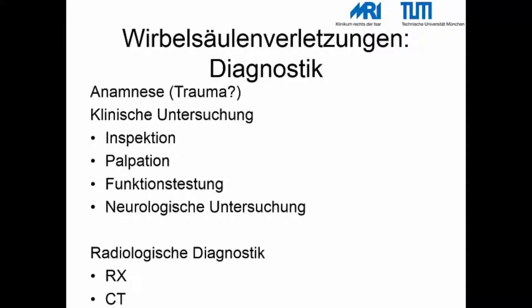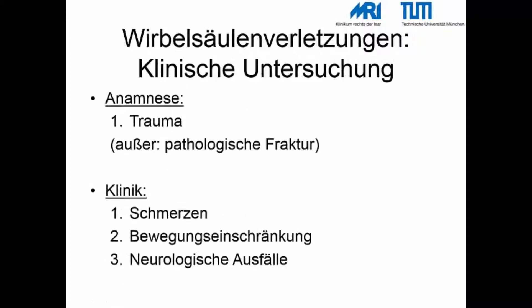Für Wirbelsäulenverletzungen ist die Anamnese ganz wesentlich. Die klinische Untersuchung sollte durch Inspektion und Palpation erfolgen. Funktionstestungen sind nur gestattet, solange radiologisch Frakturen ausgeschlossen werden konnten. Ganz wichtig ist die neurologische Untersuchung der Peripherie, um sicherzustellen, dass durch die Wirbelsäulenfrakturen keine neurologischen Schäden ausgelöst wurden. Die typische Klinik umfasst Schmerzen, Bewegungseinschränkungen und potenzielle neurologische Ausfälle.